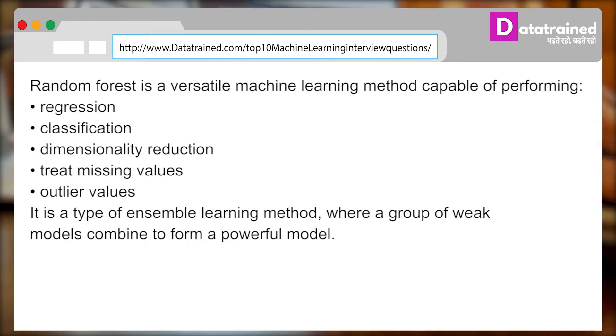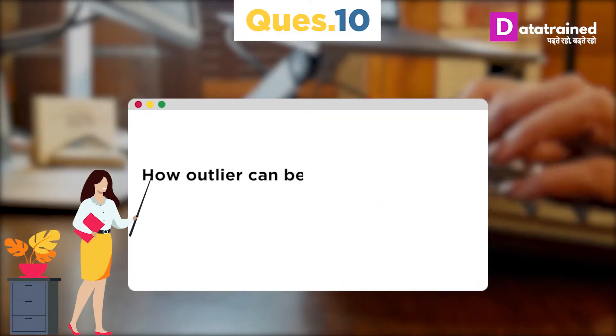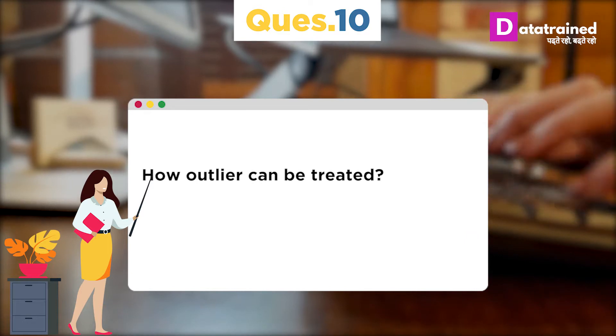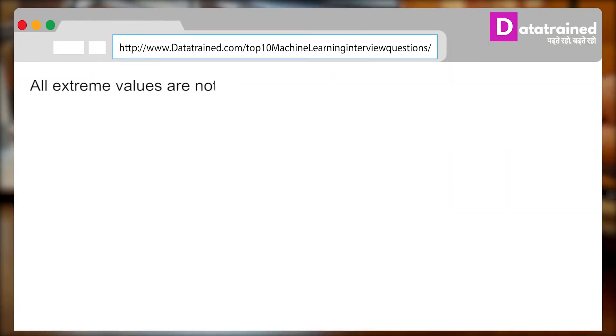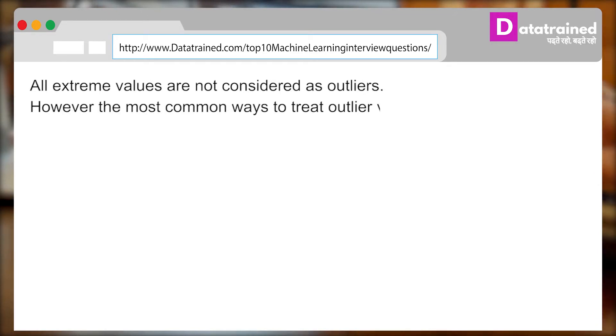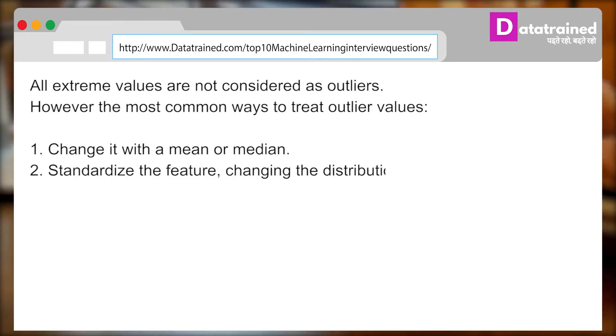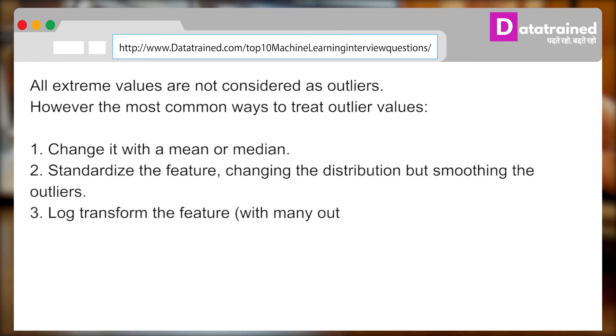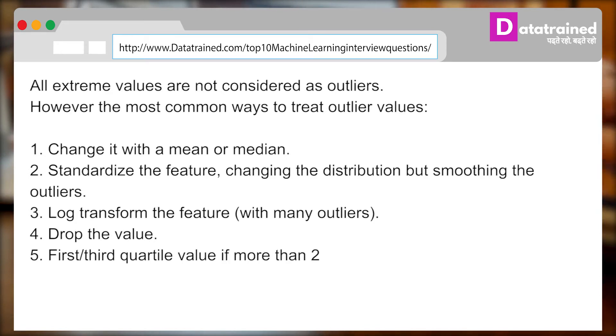Now, coming to the last question, you may be asked: How outlier can be treated? And you can answer: All extreme values are not considered as outliers. However, the most common ways to treat outlier values are: change it with a mean or median, standardize the feature, changing the distribution but smoothing the outliers, log transform the feature, drop the value, first or third quartile value if more than two standard deviations.